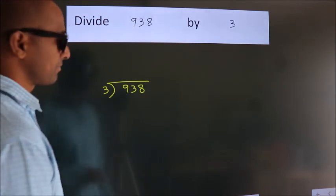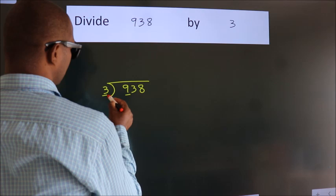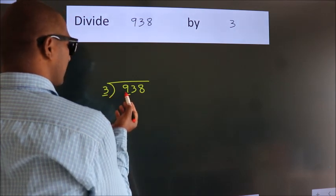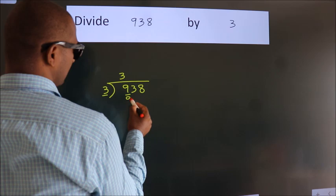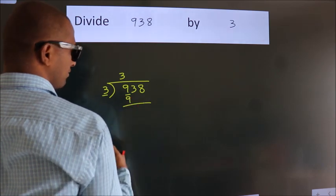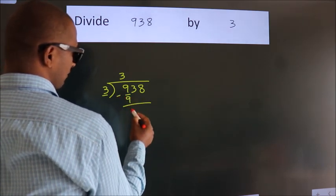Next. Here we have 9, here 3. When do we get 9? In 3 table. 3 times 3 is 9. Now we should subtract. We get 0.